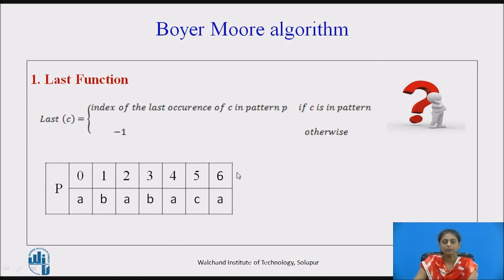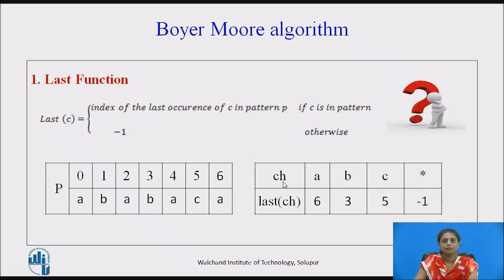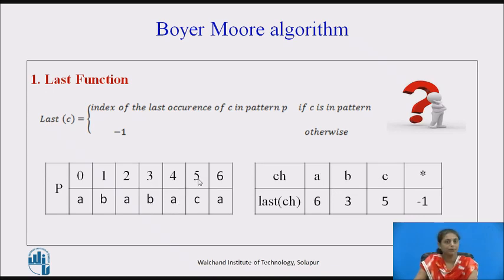Pause the video and try to find the last occurrences for the given pattern. The values are: the last occurrence of A is 6, the last occurrence of B is 3, and the last occurrence of C is 5.